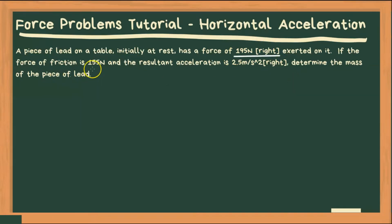There's also a force of friction that is 155 newtons and we have a resultant acceleration of 2.5 meters per second squared to the right. It's asking for the mass of the piece of lead.